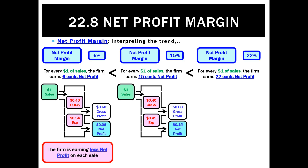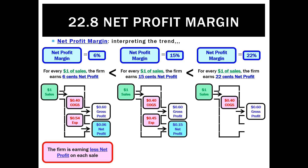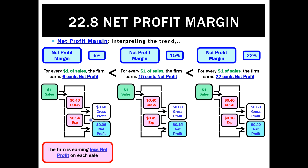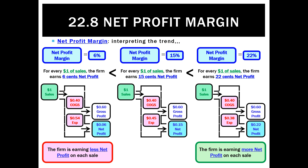If the net profit margin went from 15 to 22%, that's a good trend. Taking our gross profit of 60 cents of every sales dollar, we now end up with 22 cents in net profit at the end. It's all to do with other expenses — we managed to lower them from 54 cents to 45, then 38 cents in every sales dollar, leaving more net profit: from 6 cents to 15 cents to 22 cents. The firm is earning more net profit on each sale.